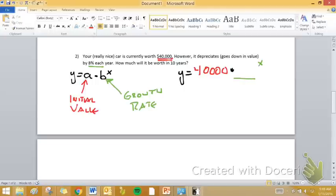It's going down in value by 8% each year. So we know that if I want something to go down in value, I need to multiply it by a number less than one. So we know that this growth rate, this b value, is going to be somewhere in between zero and one. It's going to be some sort of decimal.